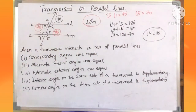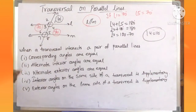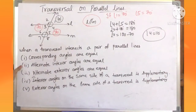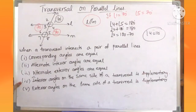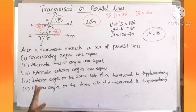This is how we use these properties. Once again: when a transversal intersects a pair of parallel lines, corresponding angles are equal, alternate interior angles are equal, alternate exterior angles are equal, interior angles on the same side of a transversal are supplementary, and exterior angles on the same side of a transversal are supplementary.